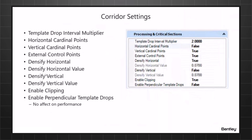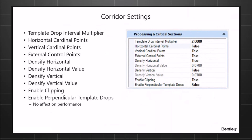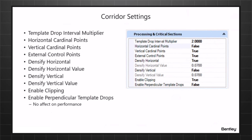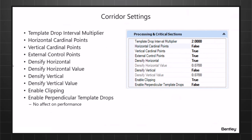Let's talk about each one of these corridor settings. These are all in there to help you speed up your processing, and also for when you get to the final stage — you can switch them to make your model denser and more accurate, because you're dropping templates at certain intervals.